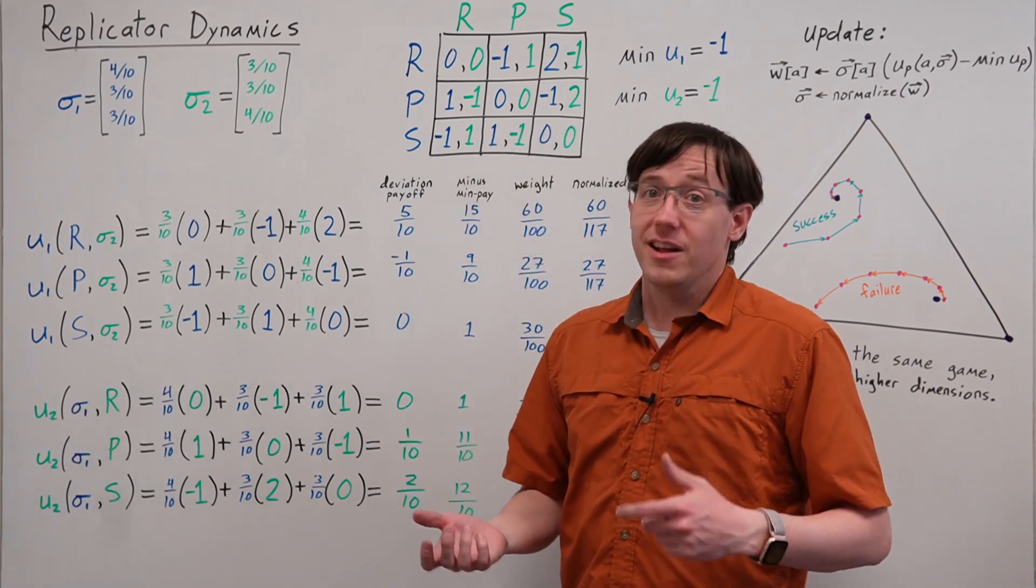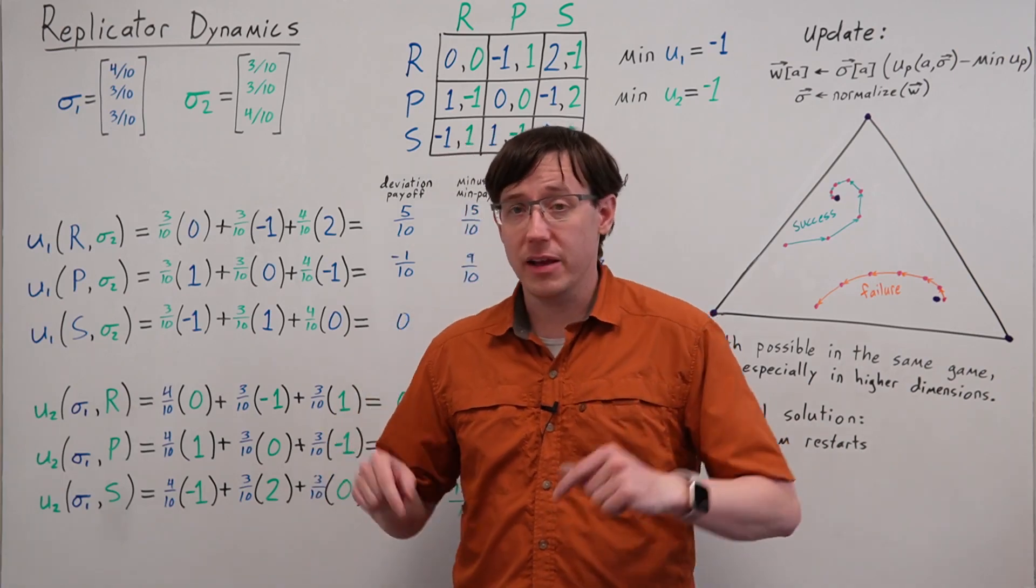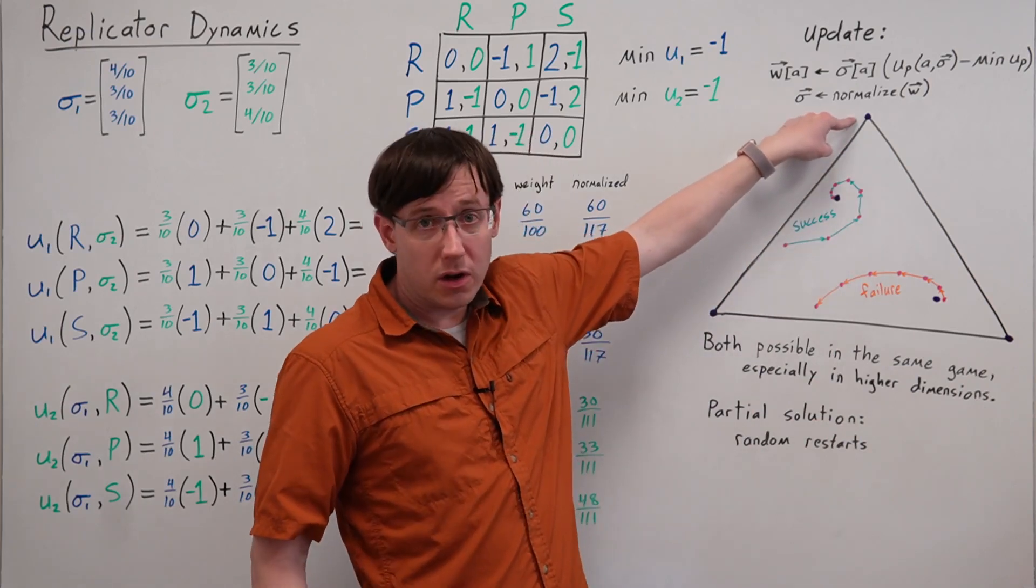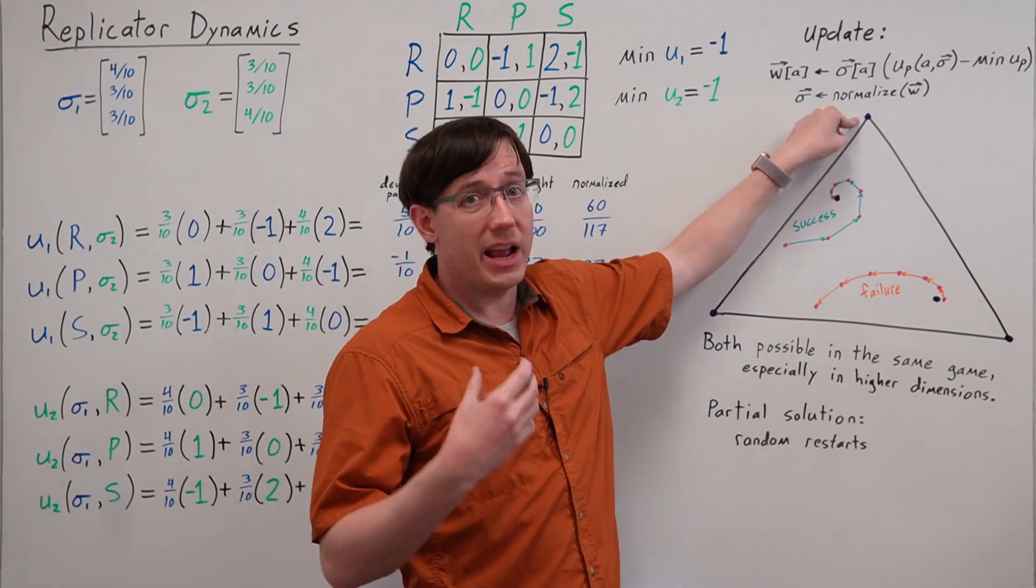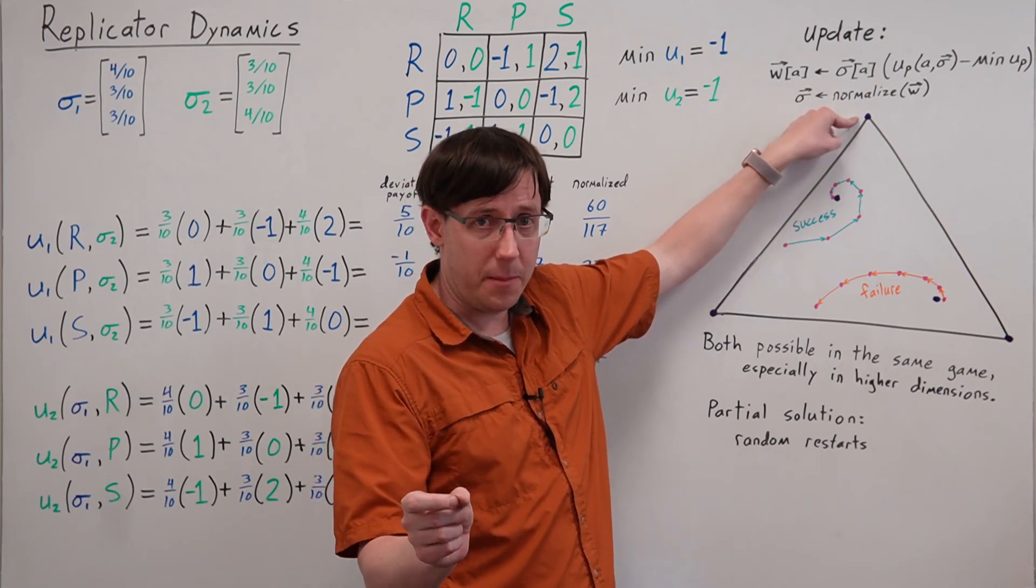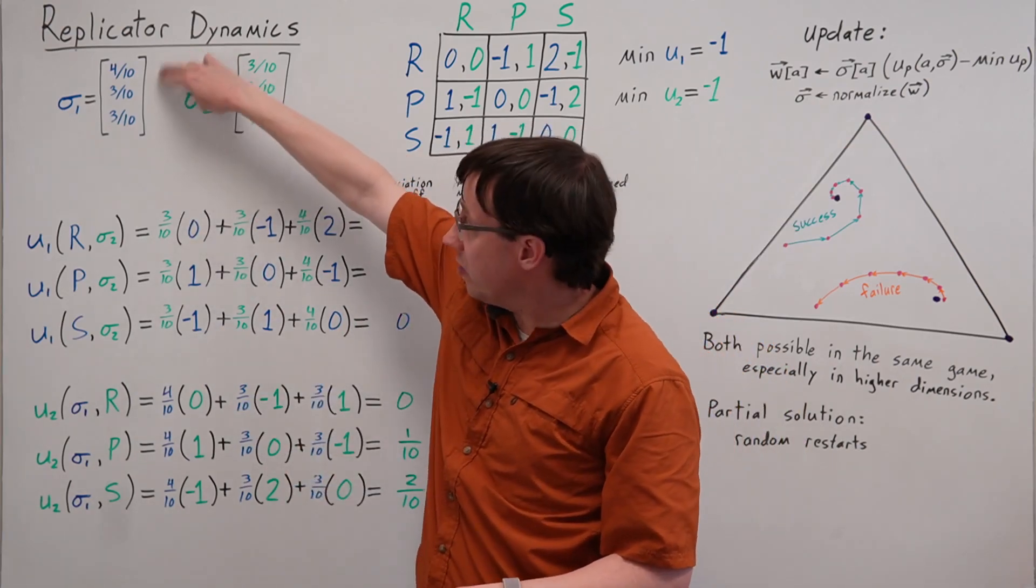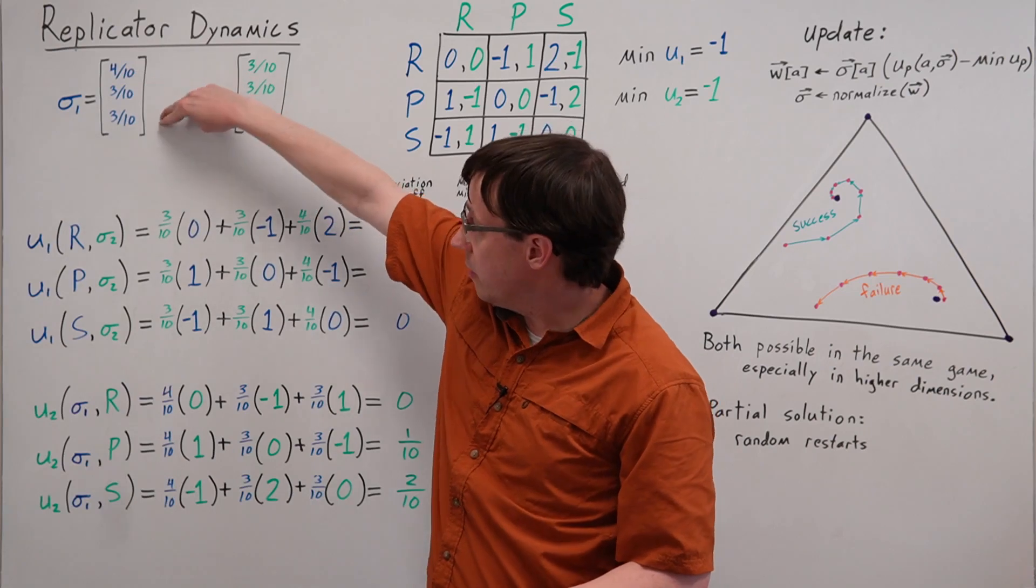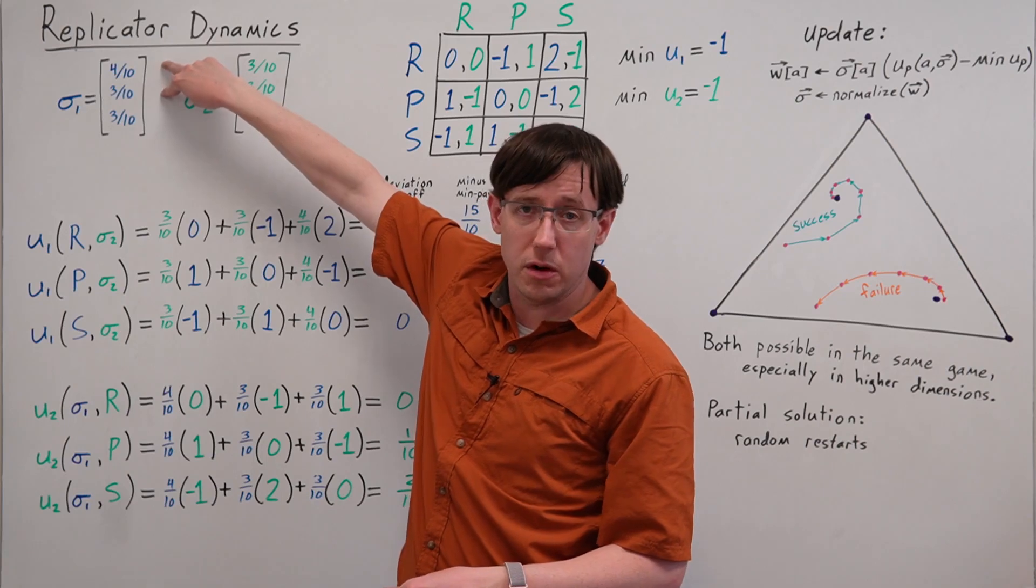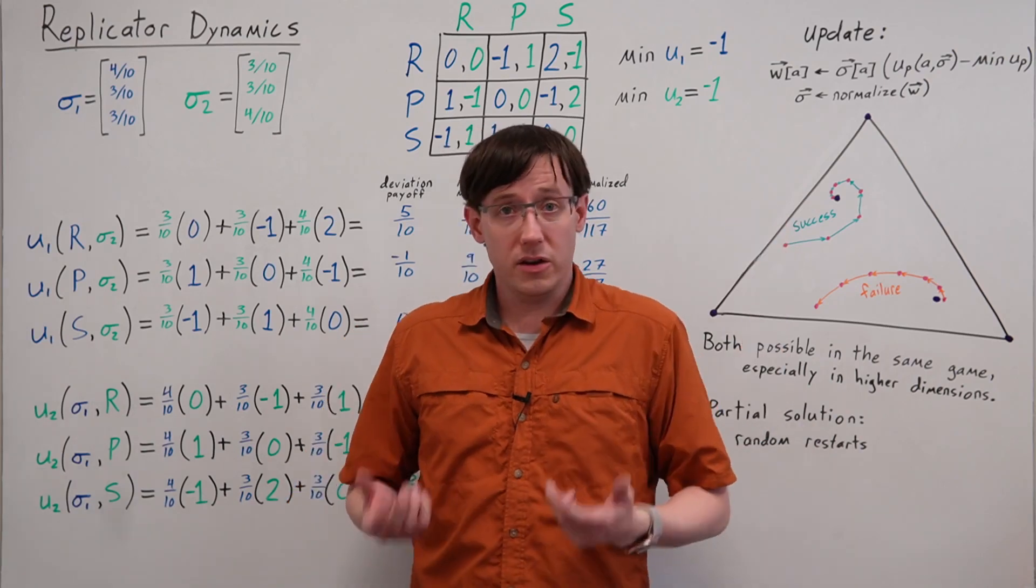But unfortunately, Replicator Dynamics also has other fixed points that may not be Nash equilibria. For example, if we take a corner of the simplex, where every player is playing one specific action with 100% probability, if my strategy has probability zero on all but one of my actions, then Replicator Dynamics can't move those probabilities away from zero, and so we'll be stuck at exactly that point.